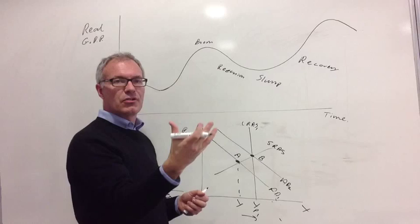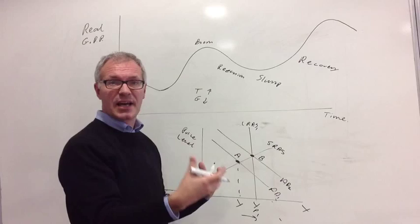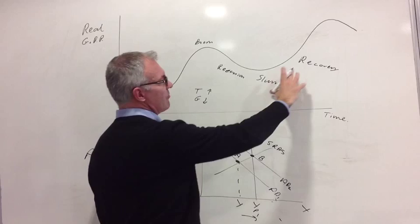In a boom, you'll tend to find there will be an increase in tax revenue. So tax revenue will increase, and there may be a fall in government expenditure because the government will be spending less on unemployment benefit.